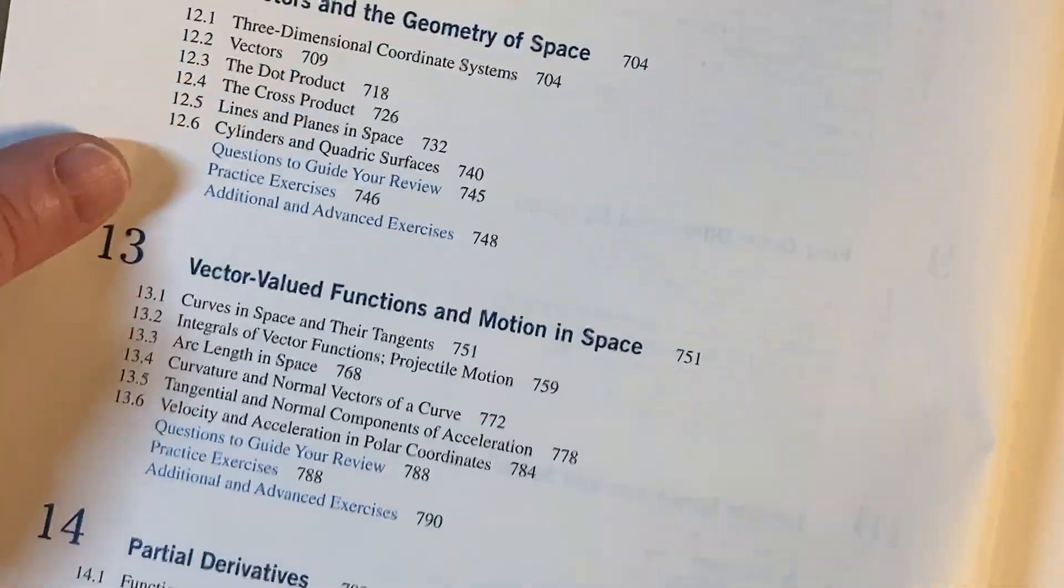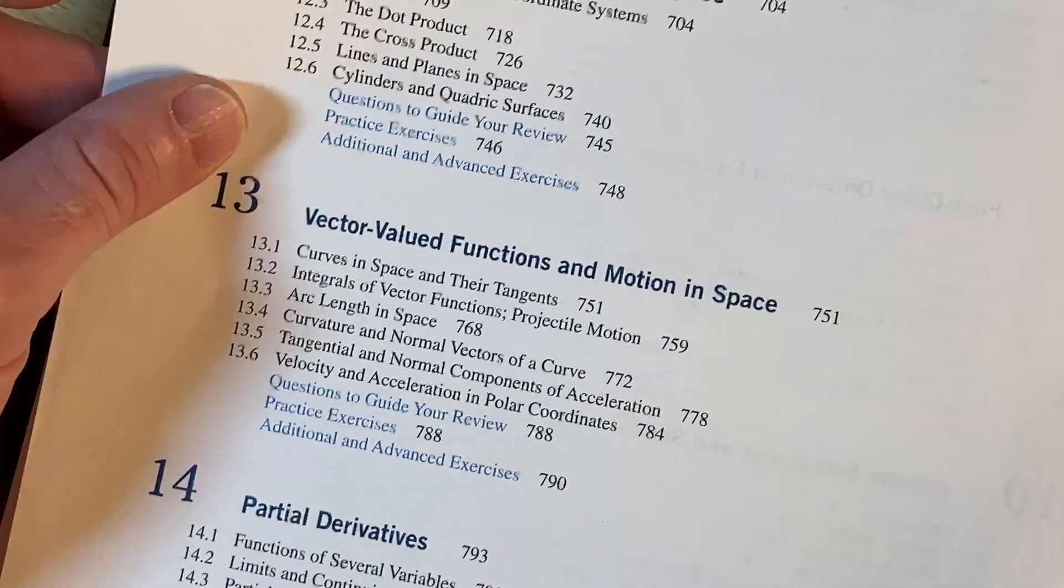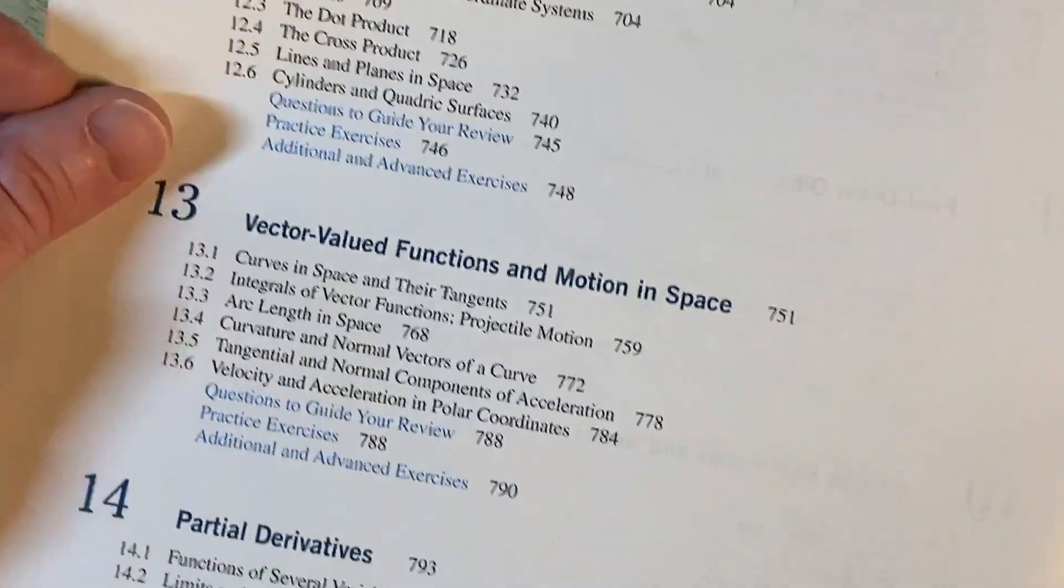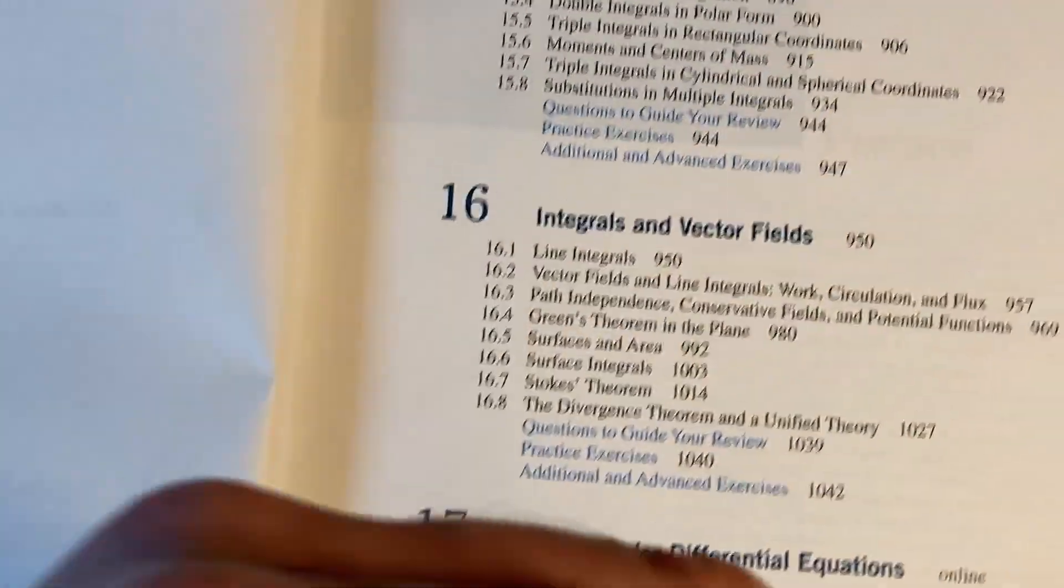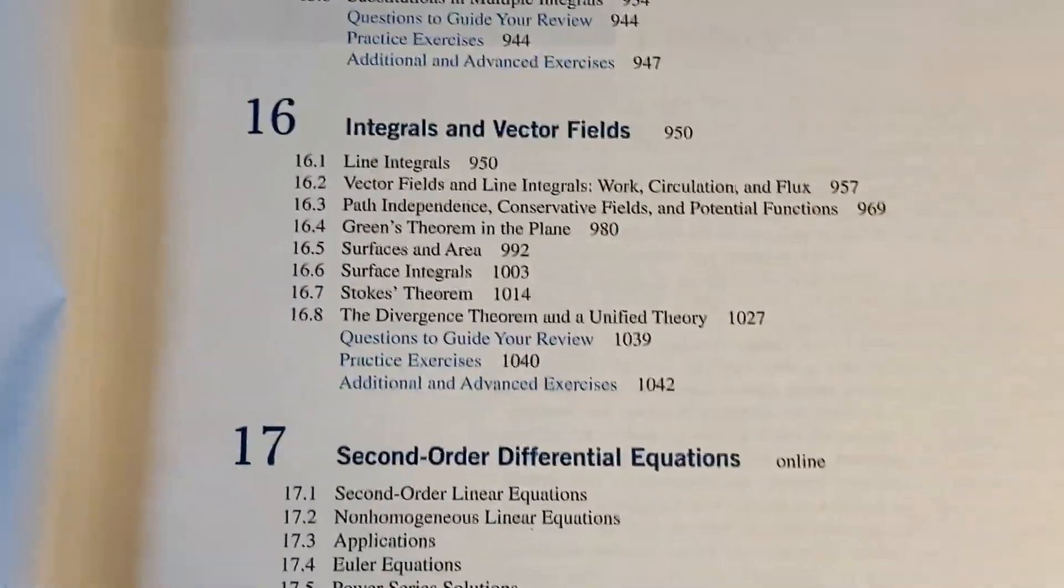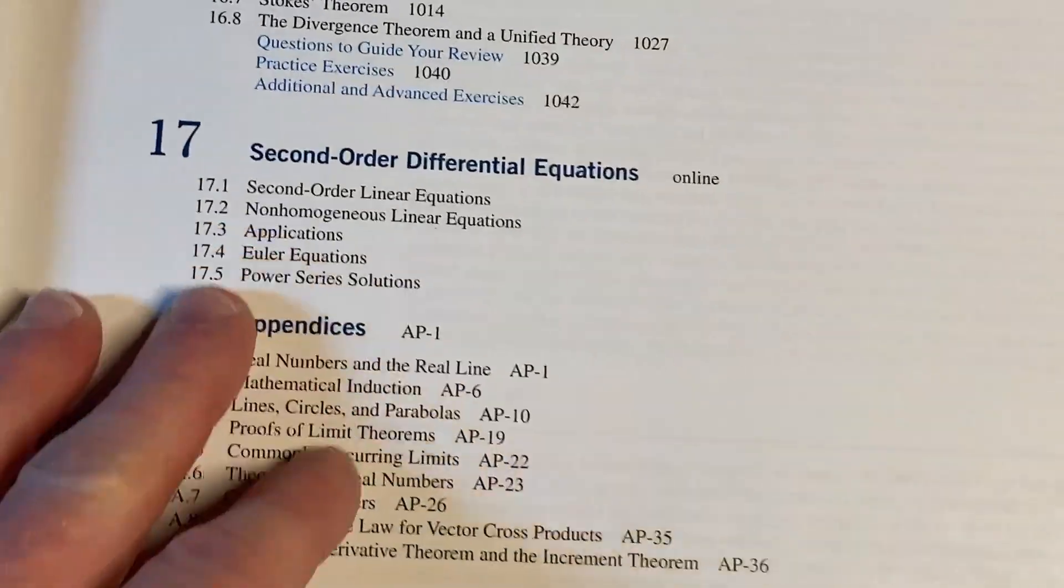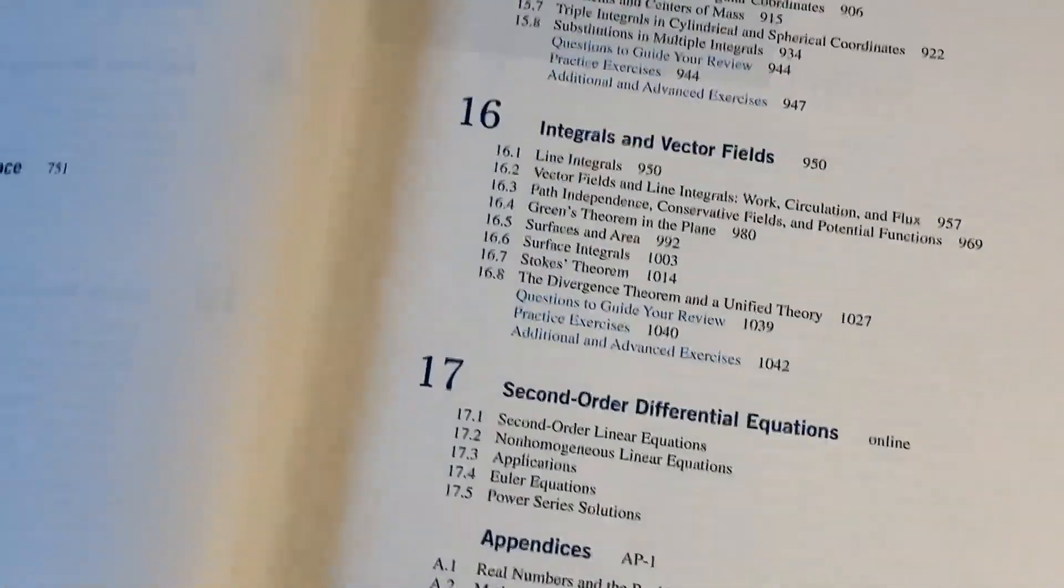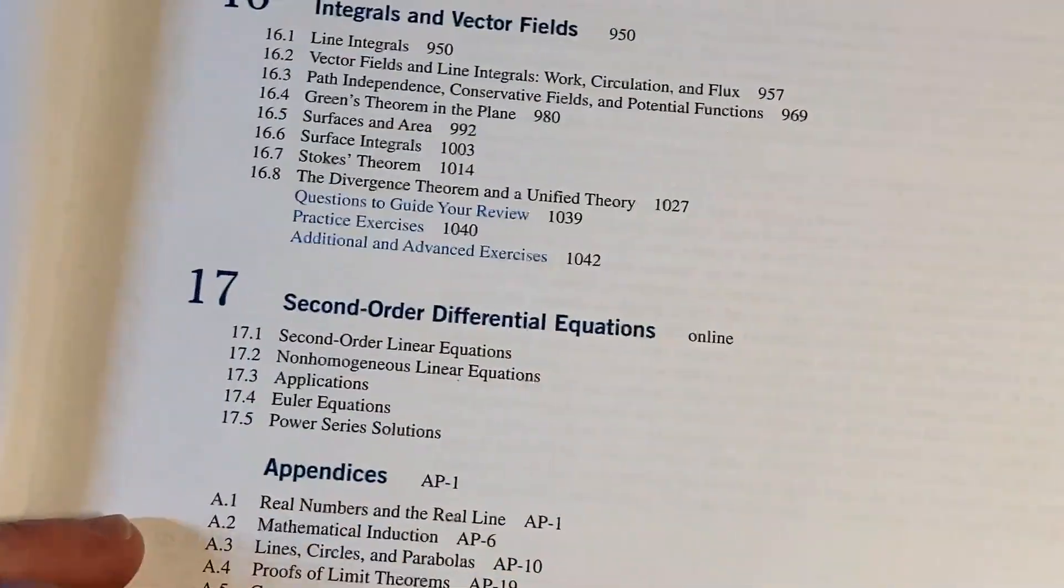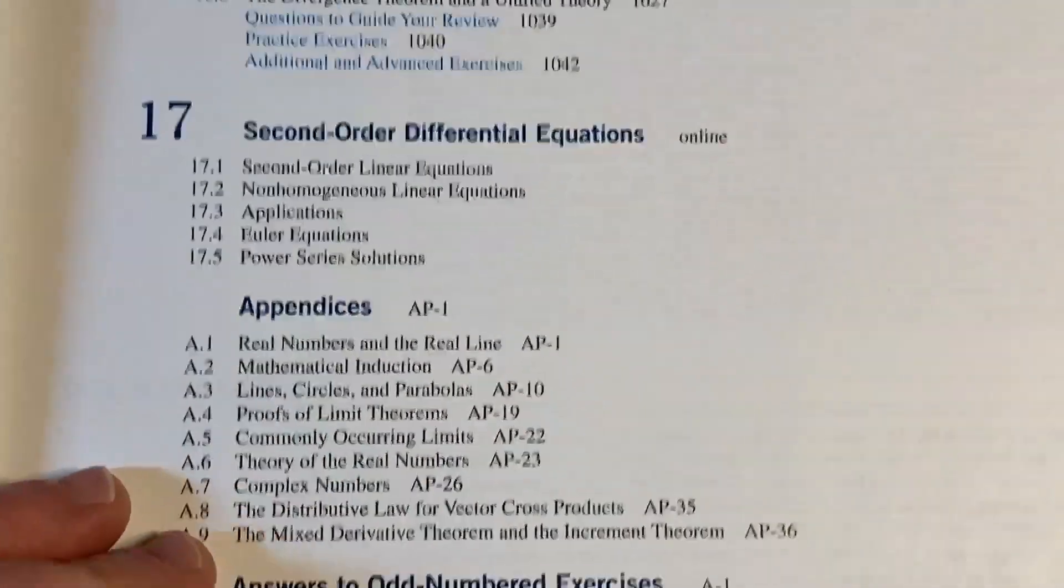And then Calc 3 stuff starts here, vectors and the geometry of space. So this is stuff that you would learn in Calc 3, multivariable calculus. It's got partial derivatives, multiple integrals, integrals and vector fields, and then some second order DEs. Typically you don't cover the DEs when you take a calculus course. I used to cover it a little bit in my Calc 1 courses near the end, but really basic stuff.